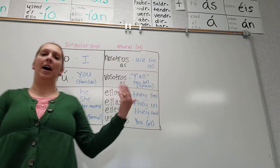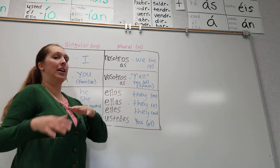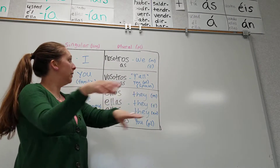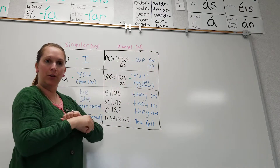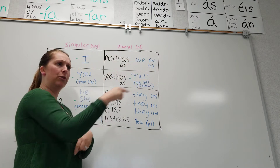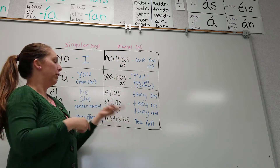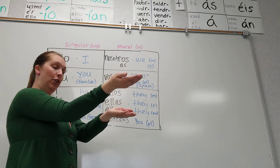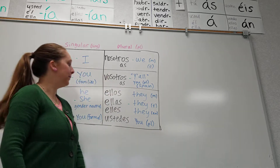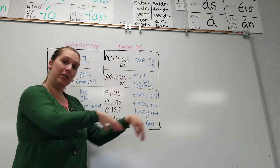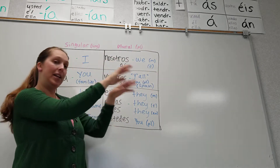Okay, aquí — plural. Here is the plural. We have nosotros, or nosotras if we want to make it feminine. Then we have vosotros — you all in Spain. And then these are our plural forms for third person: ellos, ellas, ustedes. Again, we have nosotros, vosotros, ellos, ellas, ustedes.